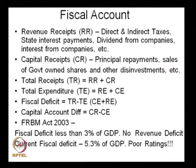Likewise, total expenditure includes both capital expenditure and revenue expenditure. These expenses are also categorized under various heads — usually you would see them in the form of budgets for various ministries, such as the Ministry of Human Resource Development, Ministry of Health, and Ministry of Heavy Industries. Each ministry has its own planned and estimated expenditure, and an aggregate of all of this is your total expenditure.